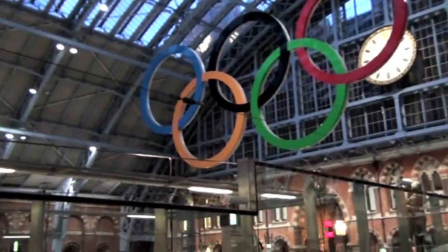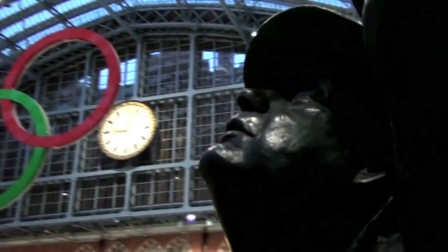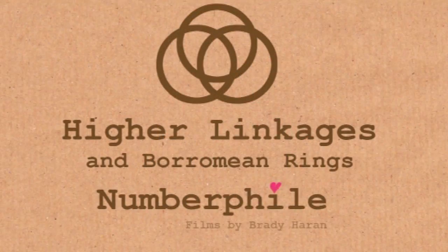So that's the Eurostar bringing people from the continent here to London for the Olympics. And if you're in London, you can't go far without seeing these. Now, the Olympic rings are pretty cool, but they're joined in a bit of a disappointing way. Each one joined to the one next to it. It's not very creative. Here at Numberphile, we like our rings joined in a bit more of a clever way.